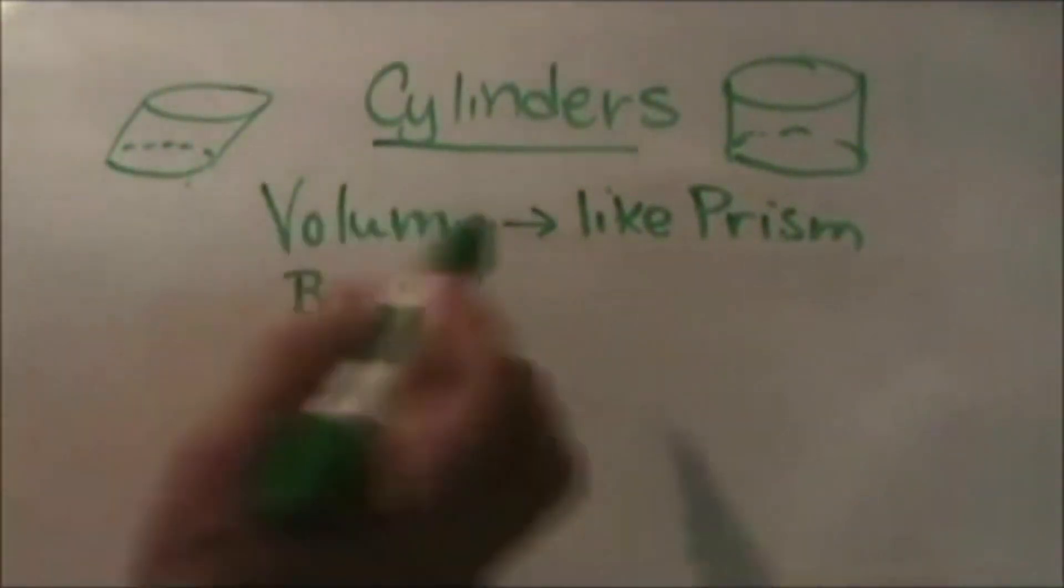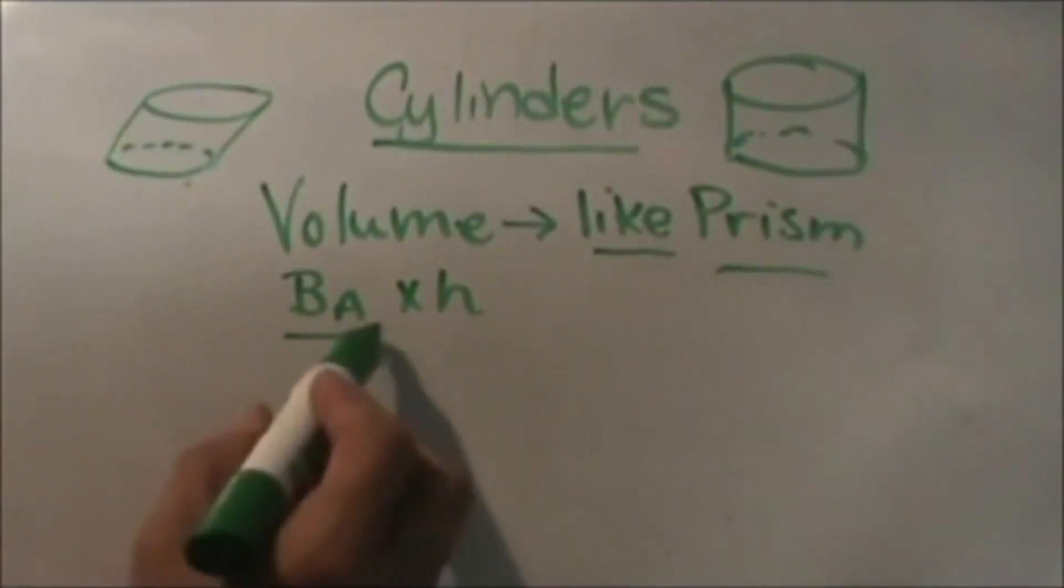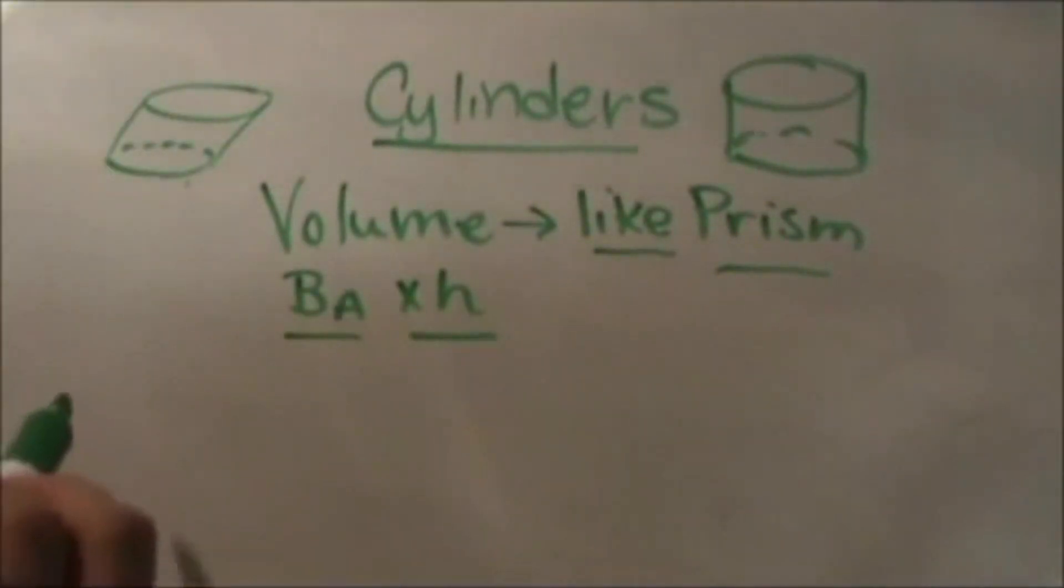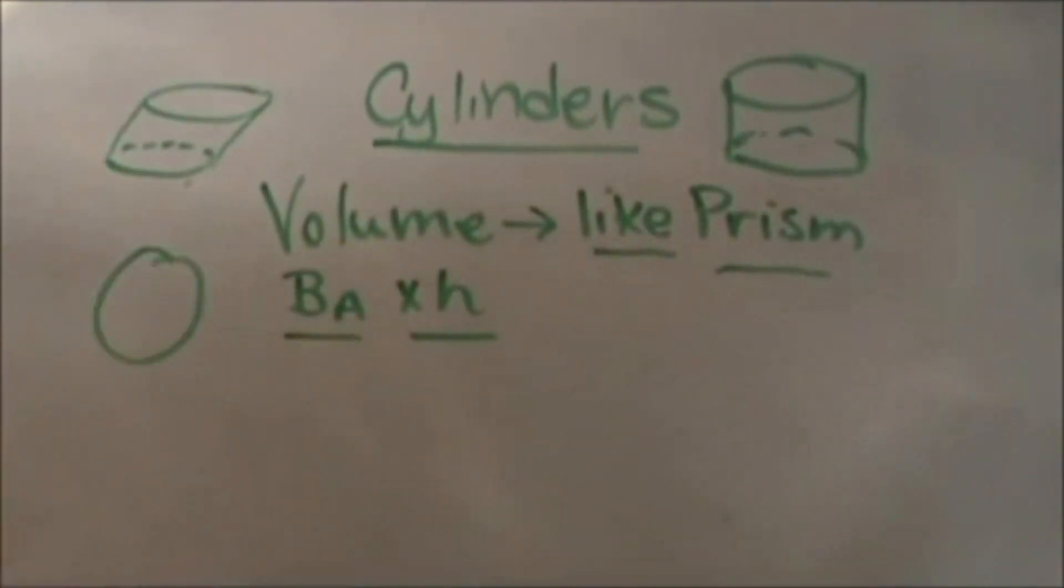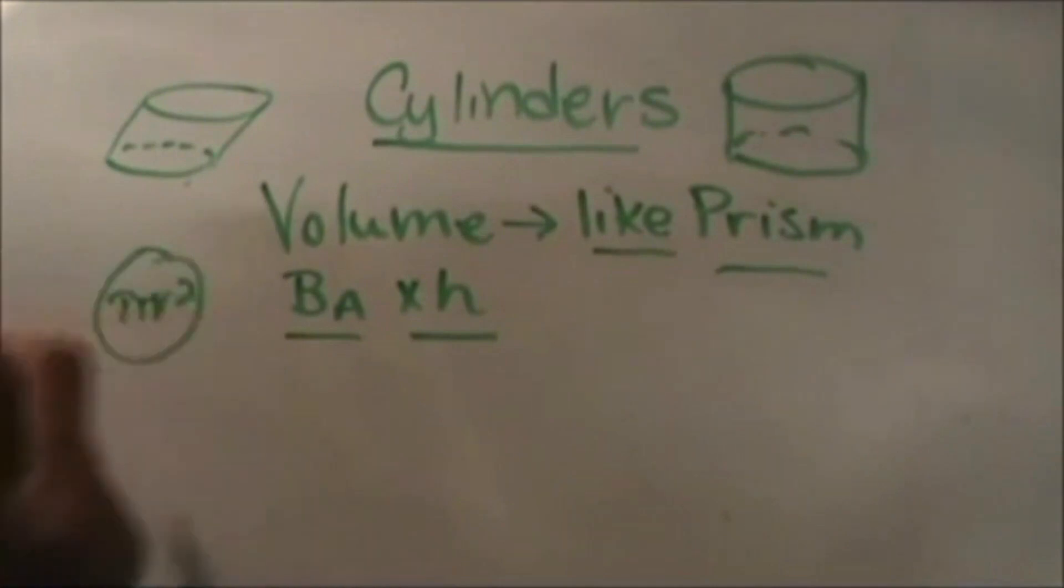To find the volume is very similar to finding the volume of a prism. You just take the base area times the height. The only difference is the base area of a cylinder is of course a circle. To find the area of the circle we use the area formula which is πr².